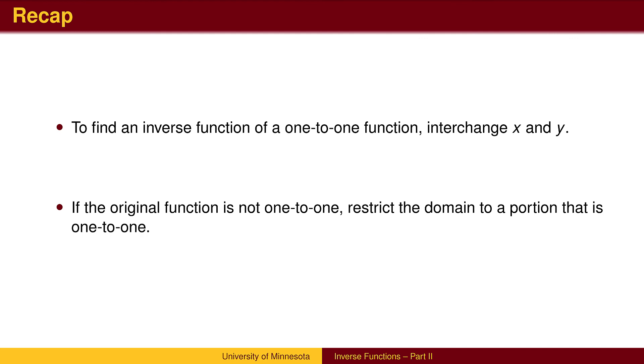To recap, if a function is one-to-one, we can find the inverse by interchanging x and y. If a function is not one-to-one, we need to restrict the domain to a portion of the graph that is one-to-one to find an inverse.